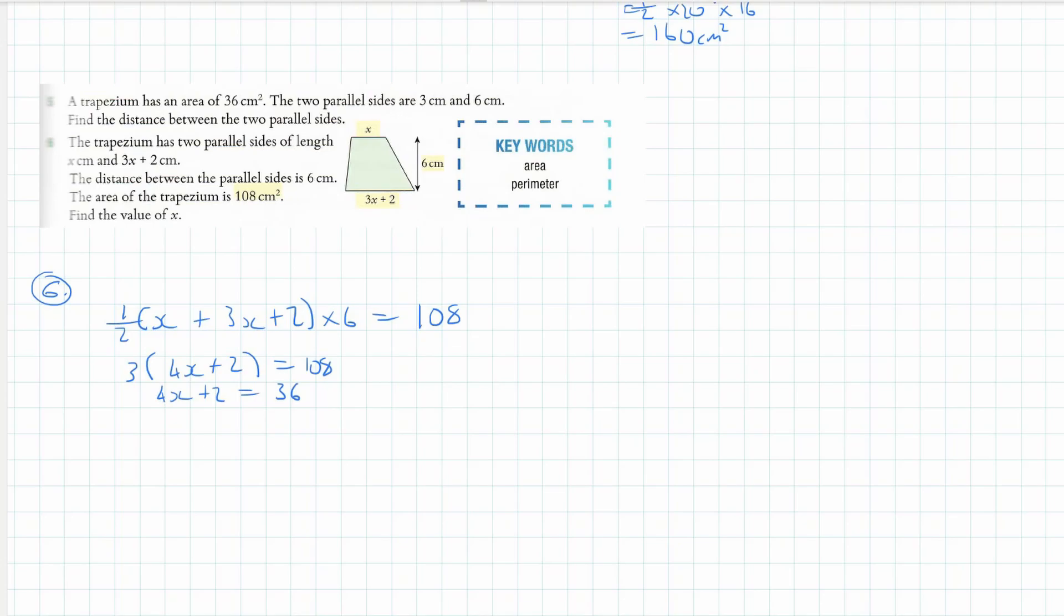Now I'm going to pull that 2 across, so I get 4x is equal to 36 minus 2, so 34. And so x is equal to 34 over 4, which gives us 8.5 centimeters. I think that should be the right answer there.